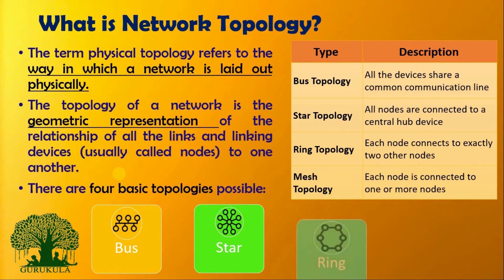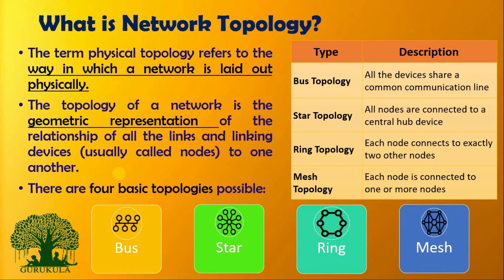In ring topology, each node connects to exactly two other nodes — one on the left side and one on the right side — so the topology looks like a ring. In mesh topology, each node is connected to more than one other node, which is what we call a mesh topology.